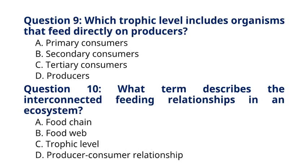Question 9. Which trophic level includes organisms that feed directly on producers? The correct answer to question 9 is option A, Primary consumers. Explanation: Primary consumers are herbivores that feed directly on producers, plants, in the food chain.